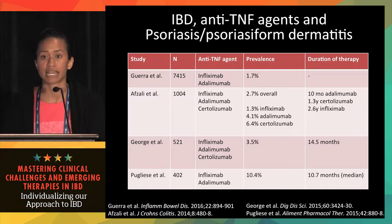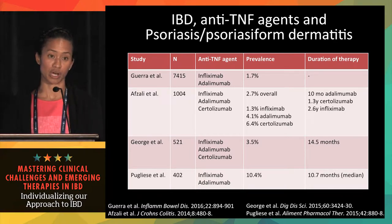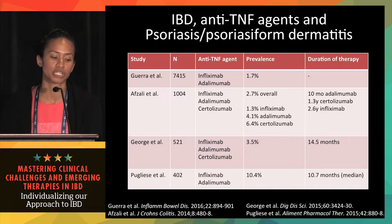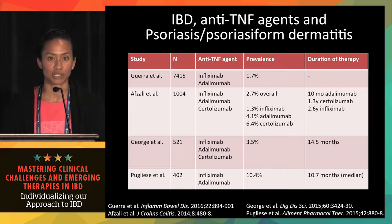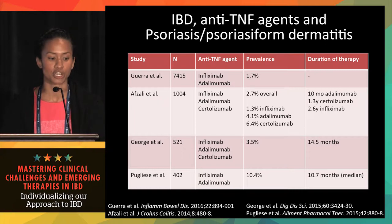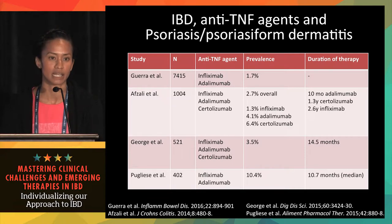Infliximab is the anti-TNF agent most commonly reported to cause psoriasiform dermatitis, but that likely just reflects that it's been around longer and is more commonly used. The Fzali study from the University of Washington actually showed a higher prevalence of psoriasiform dermatitis with adalimumab and certolizumab, and a shorter duration of therapy before onset — 10 months compared to the previously quoted 1.9 years. The rheumatology literature shows similar data with a higher prevalence with adalimumab.